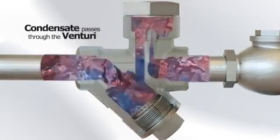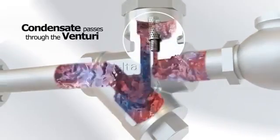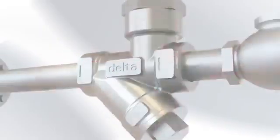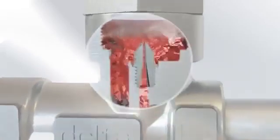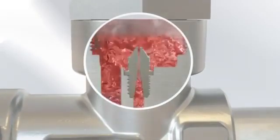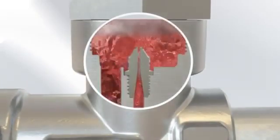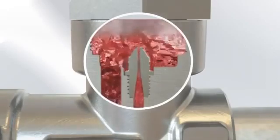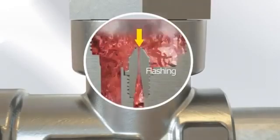This hot condensate passes through the orifice and enters the mouth of the Venturi. As the condensate passes through the mouth of the Venturi, there is a sudden pressure drop, which causes a percentage of the hot condensate to change phase from condensate to steam, a phenomenon known as flashing.